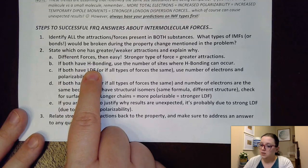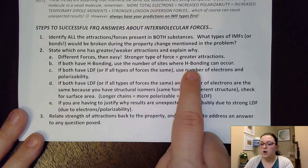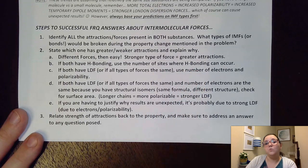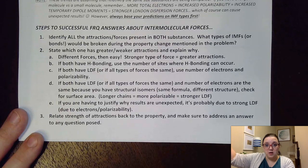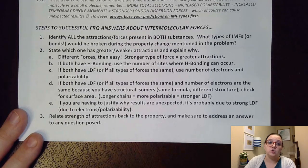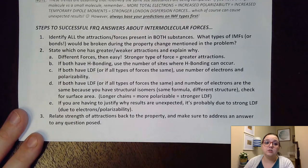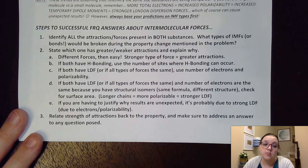Maybe in one substance there's only one area that could do hydrogen bonding with another molecule, but in a different substance it has two. The one that has two locations could have double the positions for hydrogen bonding, and so those attractive forces would be stronger in those molecules.